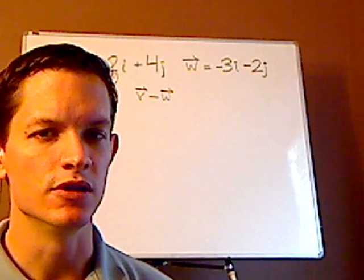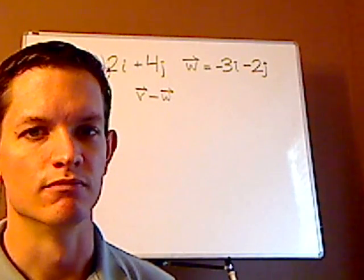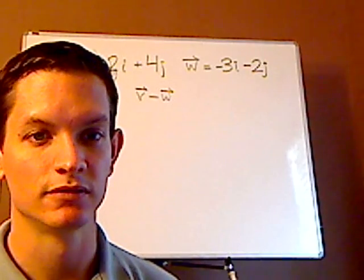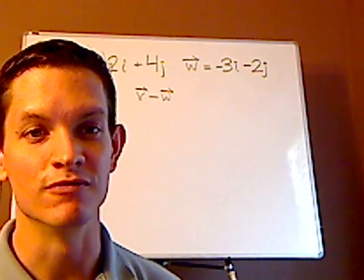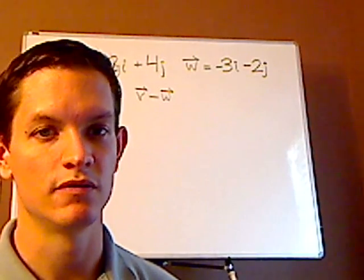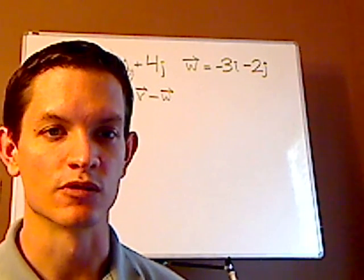and vector w is negative 3i minus 2j, and we're subtracting them. So it's v minus w. Pause the video and see if you can try this one on your own.